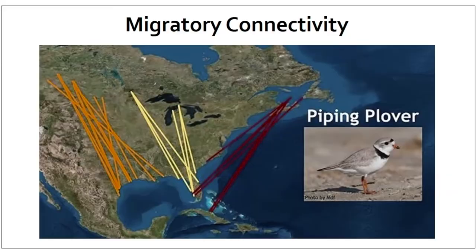One of the important pieces of information we're now able to measure is called Migratory Connectivity, which is the connections of migratory individuals and populations between seasons. There are really two components to migratory connectivity: first, where do individuals and populations occur between seasons — linking the geography — and second, what is the extent or strength of co-occurrence of populations between seasons? This paper is about the strength, the fine-scale distributions of populations between one season and another.